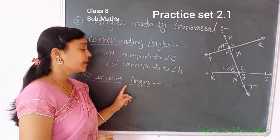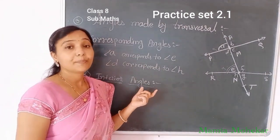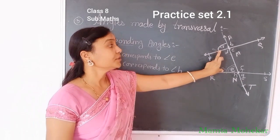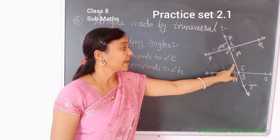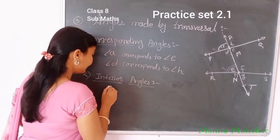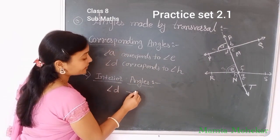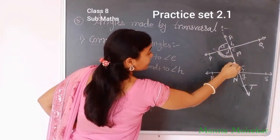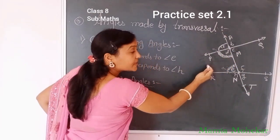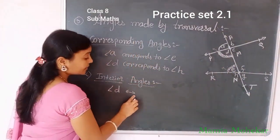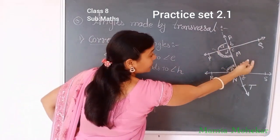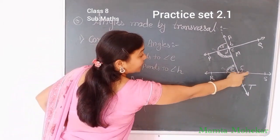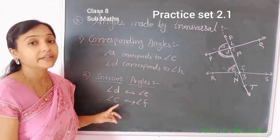The next type is interior angles. Interior angles are a pair of angles that are on the same side of the transversal and inside the two given lines. For example, angle B and angle E are interior angles — same side of the transversal and inside the two lines. Similarly, angle D and angle G are another pair of interior angles.